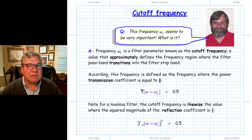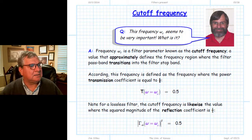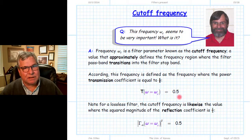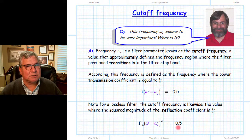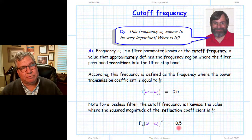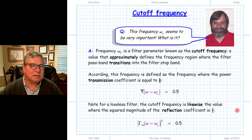The cutoff frequency ωc is defined as the frequency where the transmission T equals 0.5. Since T + |Γin|² = 1, if T = 0.5 at the cutoff frequency then the reflection is also 0.5 there. In other words, ωc is the frequency at which half of the incident power is reflected and the other half propagates through the filter and is ultimately absorbed by the load. We call this the half-power point.